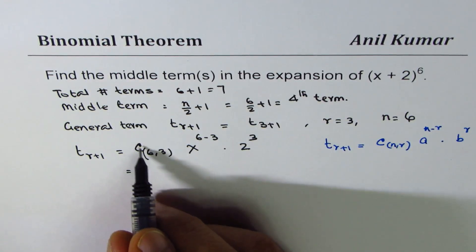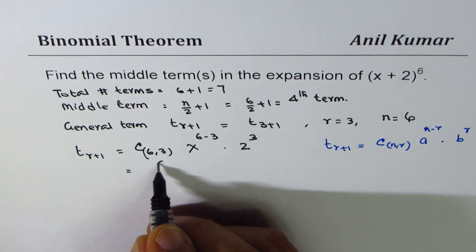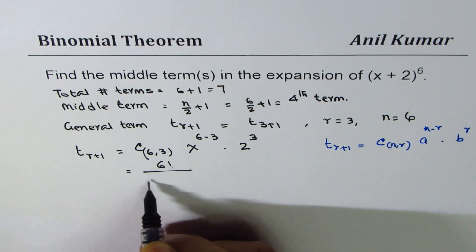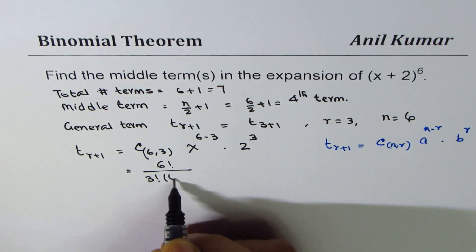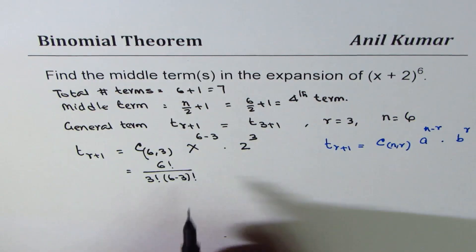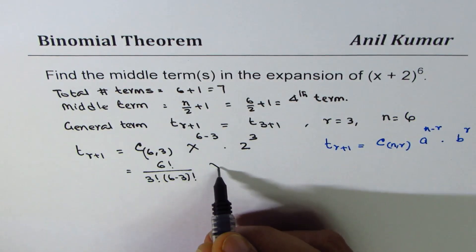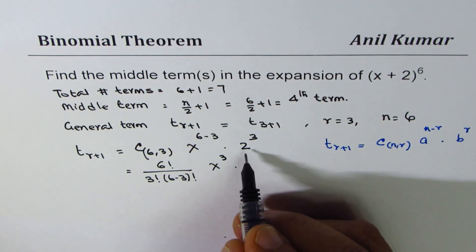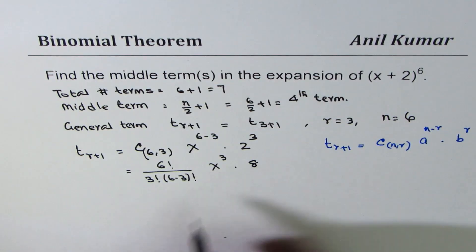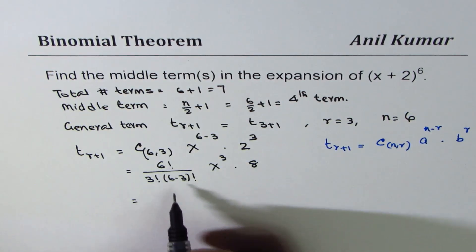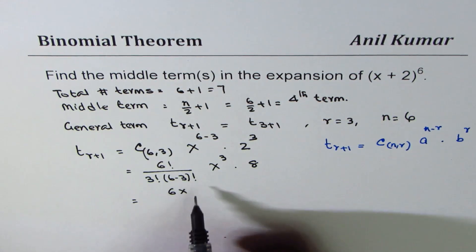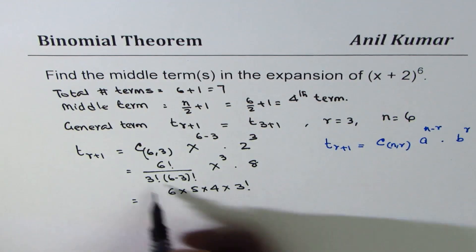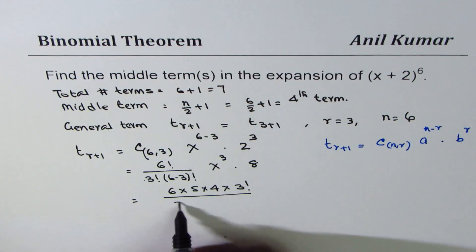C(6,3) is 6 factorial divided by 3 factorial times 3 factorial, x to the power of 3, times 8. Now we can write this as 6 times 5 times 4 times 3 factorial that will cancel with this one.